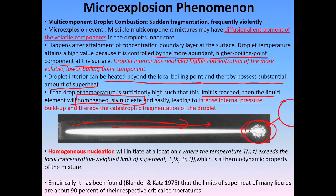If the superheat is sufficiently high, the liquid will homogeneously nucleate. Homogeneous nucleation — as opposed to heterogeneous nucleation — does not require a surface; it happens at the molecular level. So you can homogeneously nucleate and gasify, forming small bubbles inside the droplet. These bubbles grow, create a pressure surge, and cause this catastrophic breakup. It is almost like bubbling inside a droplet, which grows and shatters the whole droplet because of pressure expansion.